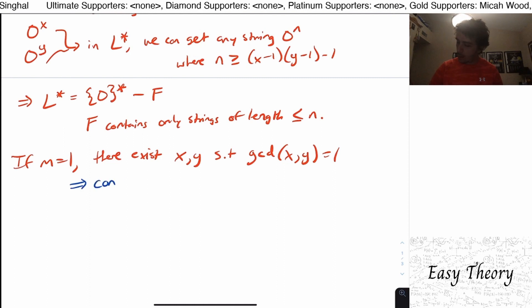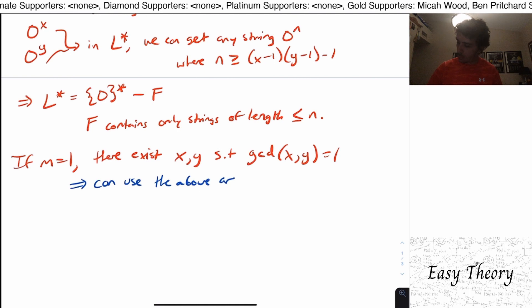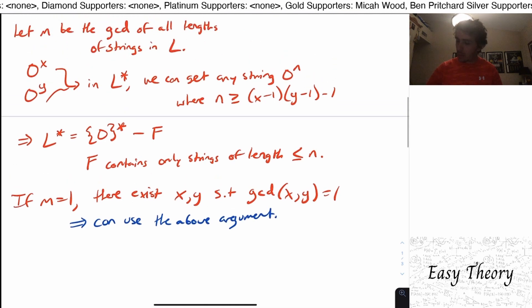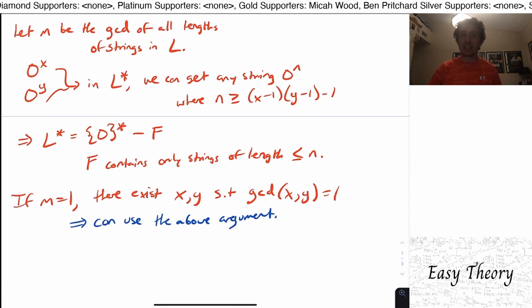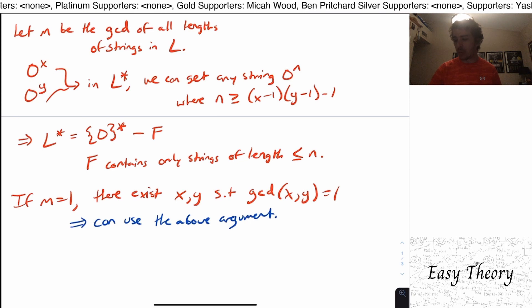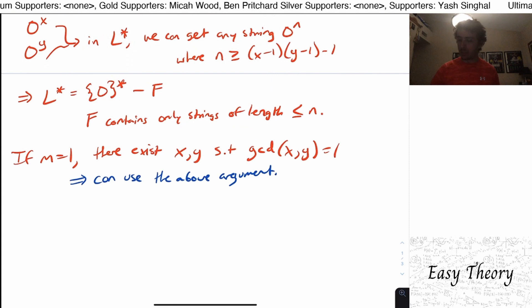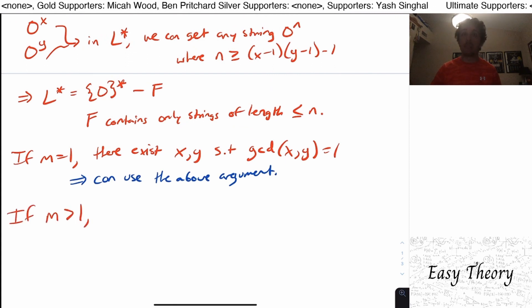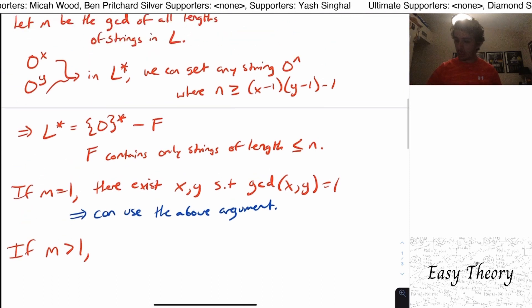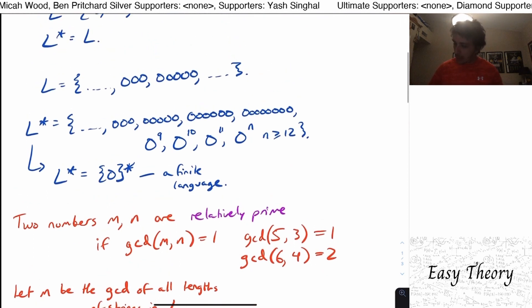Because the argument above relies on the fact that two strings have relatively prime lengths. So x and y are relatively prime here. But what if it's not the case that there are two numbers that are relatively prime, which is corresponding to the case where M is strictly bigger than one. So the greatest common divisor is strictly bigger than one.